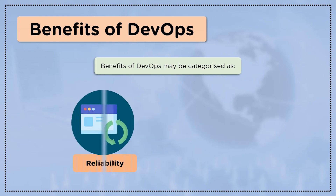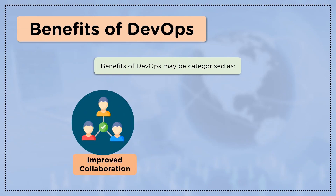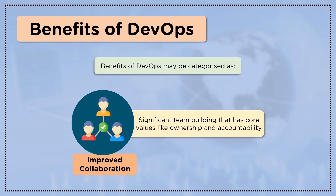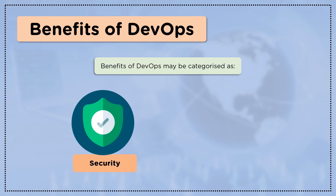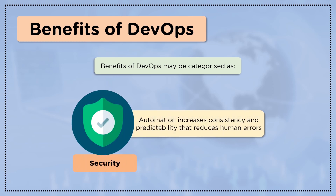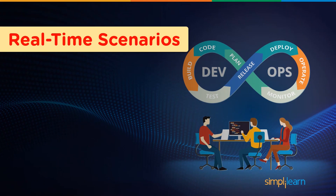The third category is reliability — DevOps ensures the quality of infrastructure and application updates. Another critical category is improved collaboration, making it possible to have effective team building with core values like ownership and accountability. The last category is security: automation increases consistency and predictability, which reduces human errors.